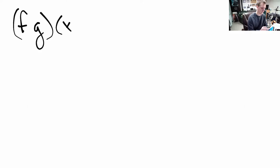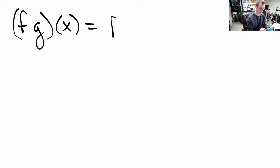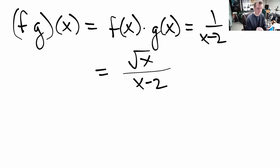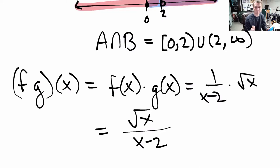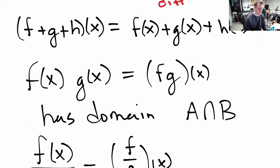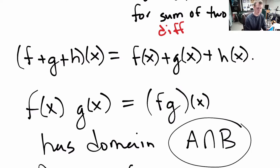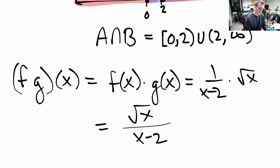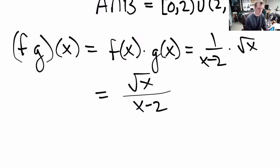For the product: fg of x equals f of x times g of x, which is 1 over (x minus 2) times square root of x, giving us square root of x over (x minus 2). What's the domain? It's the same as before — nothing changed. Products, sums, and differences all have the same domain: just the intersection of the two original domains.